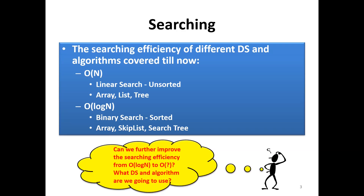This increase in efficiency with binary search is at the cost of sorting the data before the binary operation is performed. So the big question now is: is there any other searching technique that can further minimize the complexity of the searching approaches? This is the reason we are studying these hashing techniques.